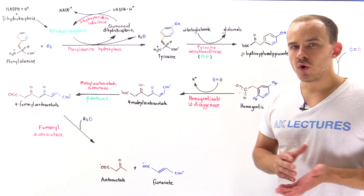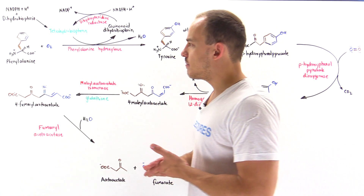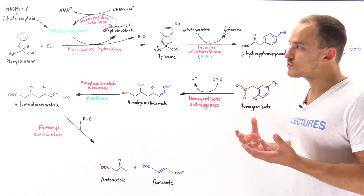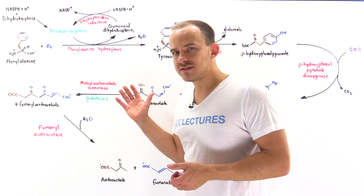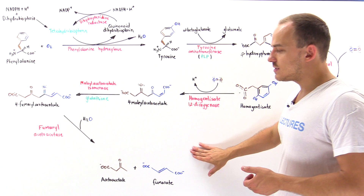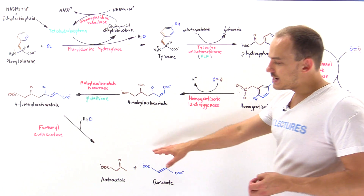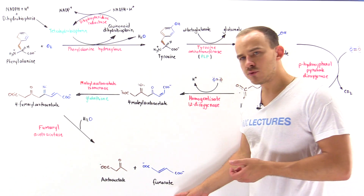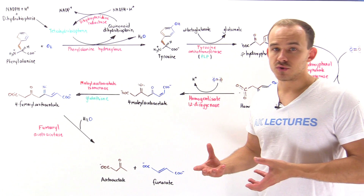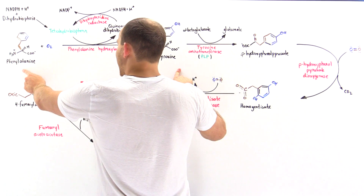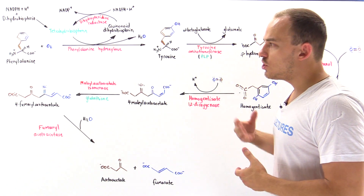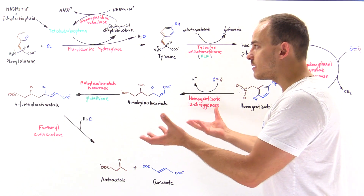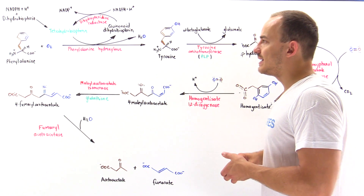The next two amino acids we're going to focus on are the aromatic amino acids, phenylalanine and tyrosine. We're going to look at how our liver cells can metabolize these two amino acids, ultimately forming acetoacetate and fumarate. Acetoacetate can be used by our hepatocytes to form ketone bodies, while fumarate can be used to form glucose. That's exactly why phenylalanine and tyrosine are known as glucogenic and ketogenic amino acids — because we can use them to ultimately form both glucose and ketone bodies.